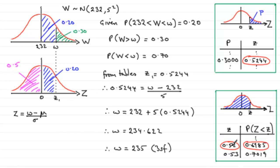So that gives you some idea of how we can work backwards through the normal distribution tables to get an observed value.